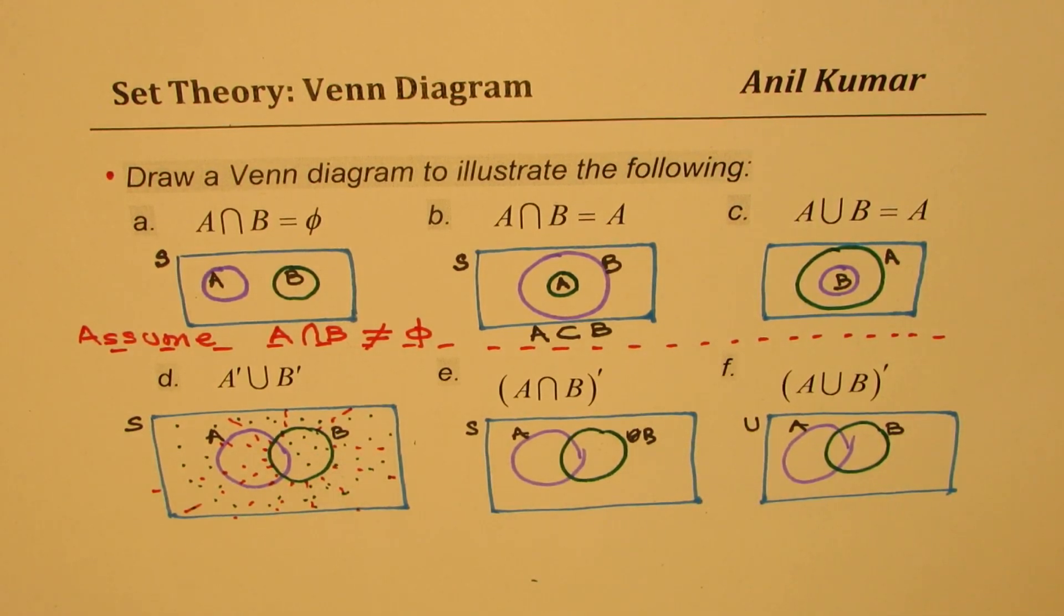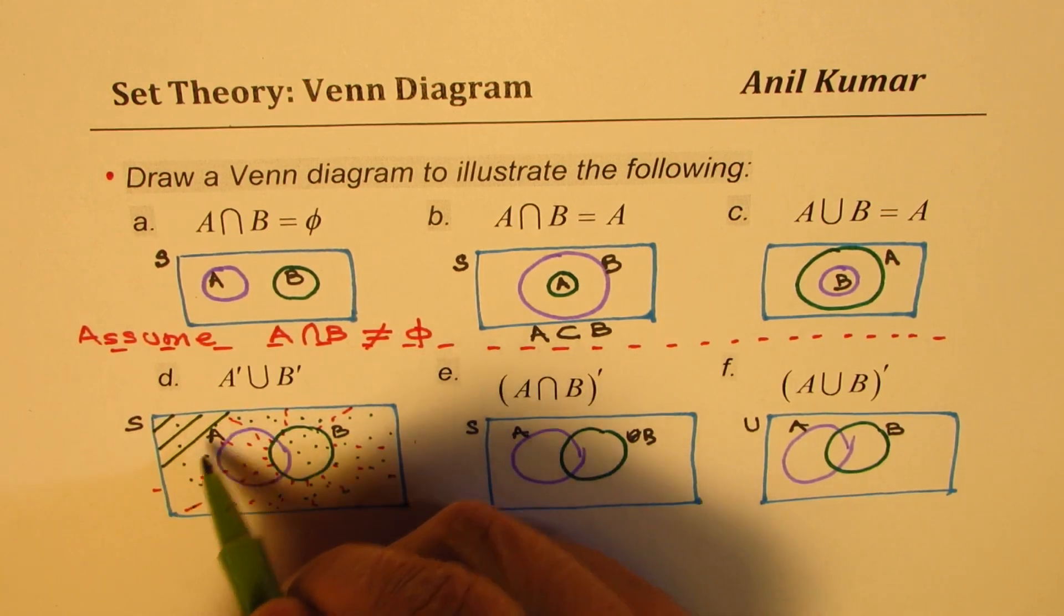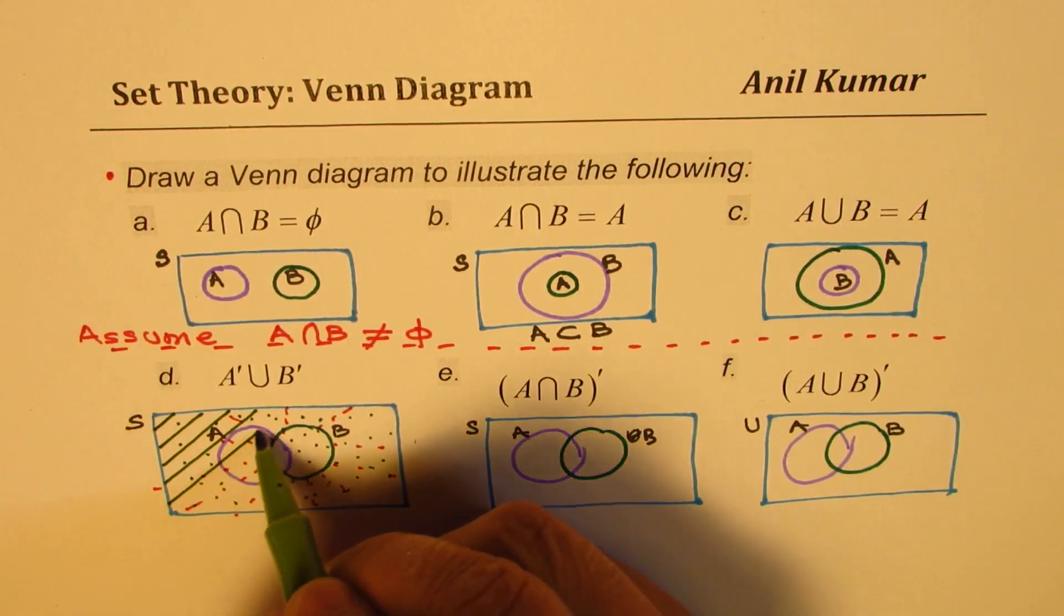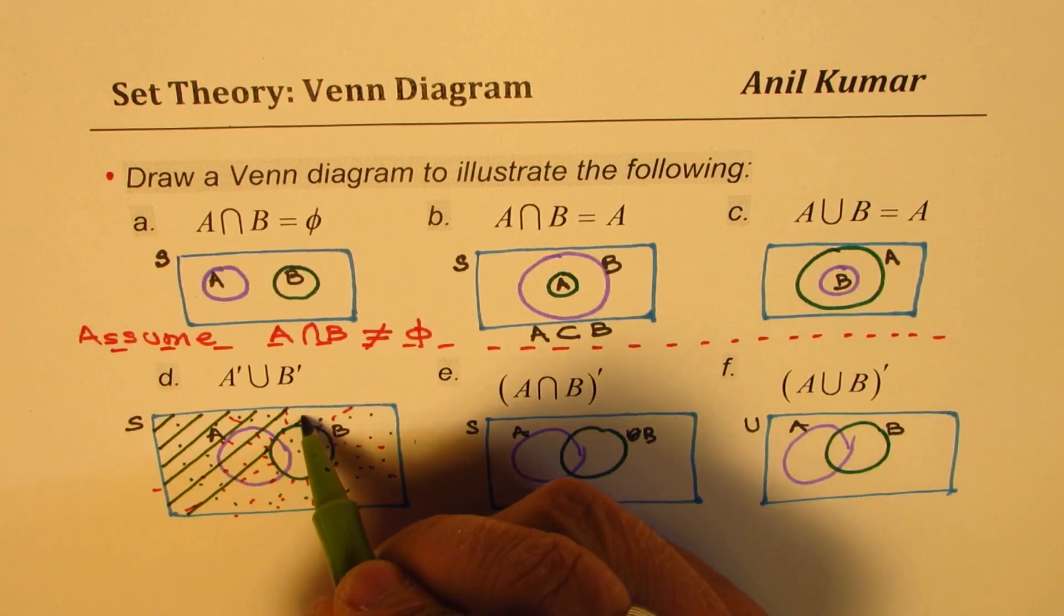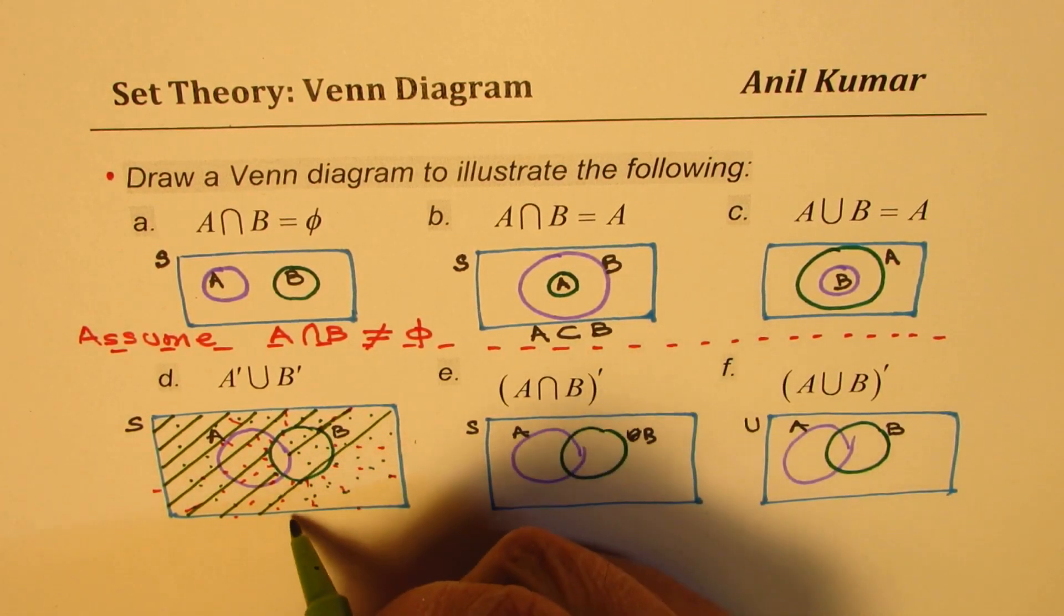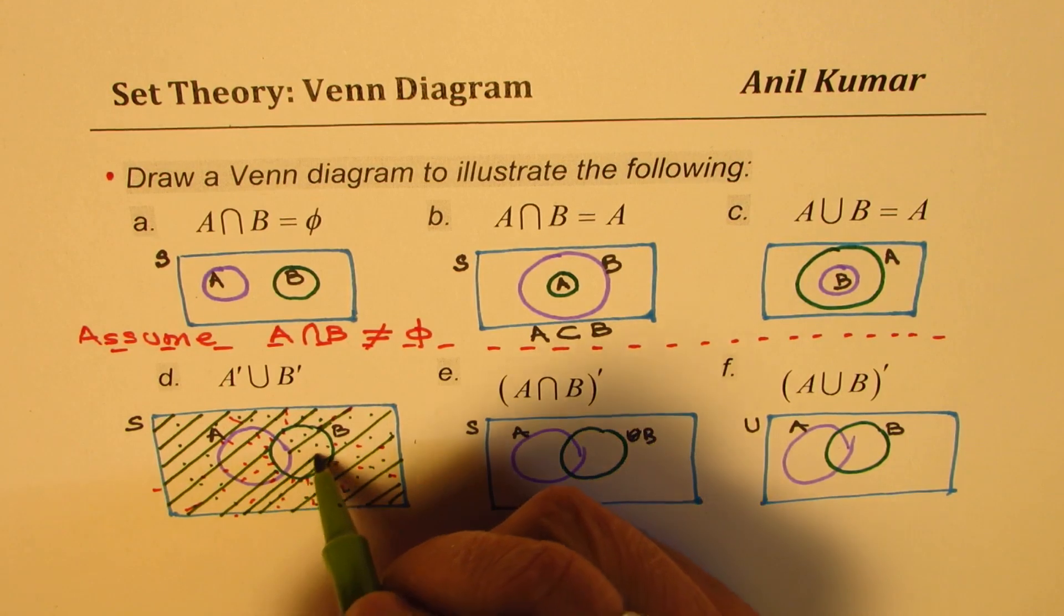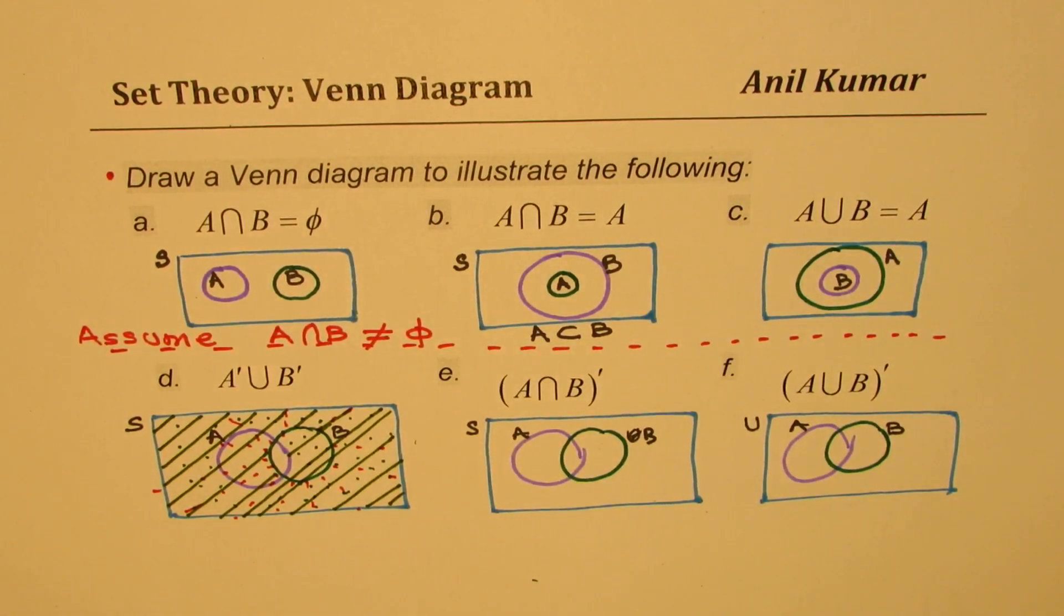So that is how we are going to shade this time. So union of complements of A and B is a set which includes everything except for the intersection of A and B. So it includes everything except for this small portion which is intersection of A and B. So that is how you actually use you get this one.